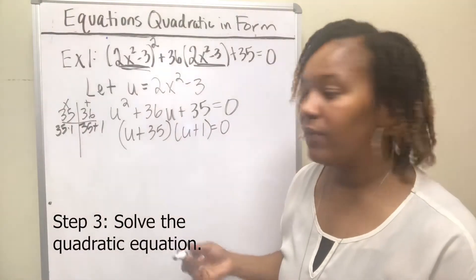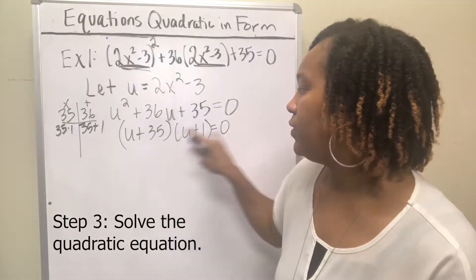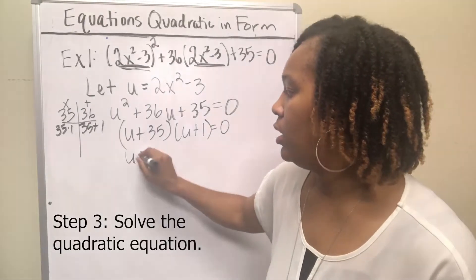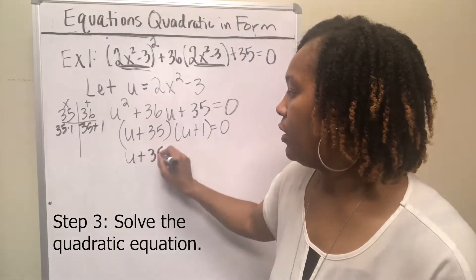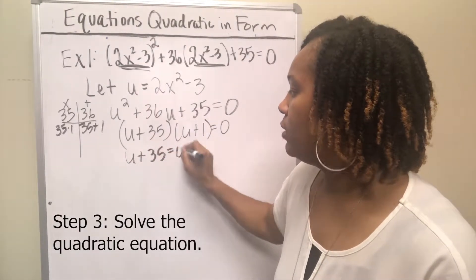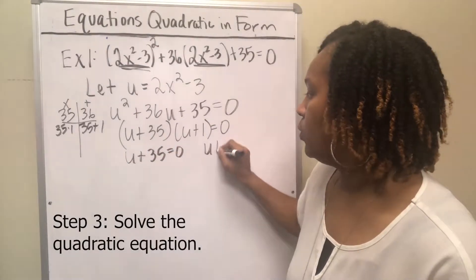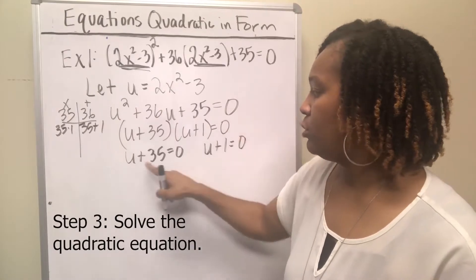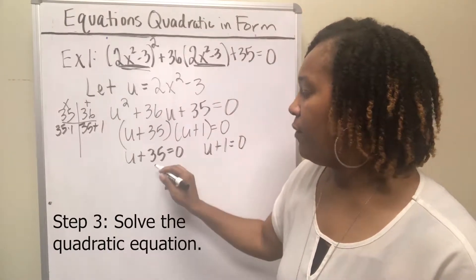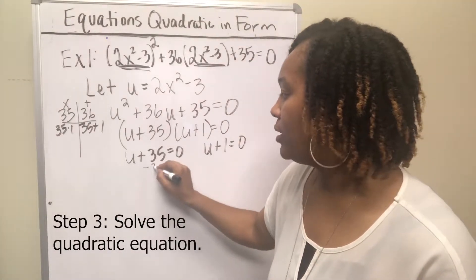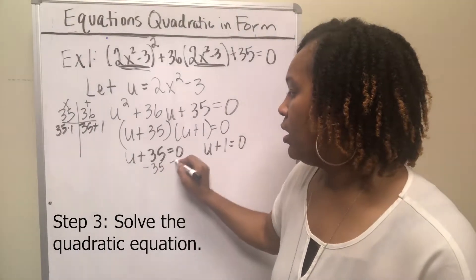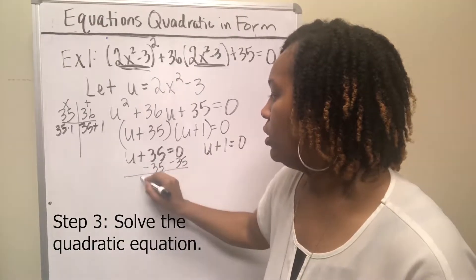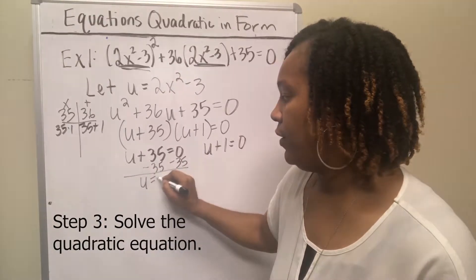So this factors into (u + 35)(u + 1) = 0. In order to solve it, you take each of these factors and set them equal to zero. So u + 35 = 0, and u + 1 = 0. Subtract 35 from both sides and you get u = −35.